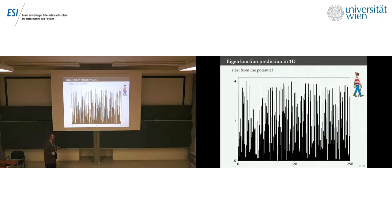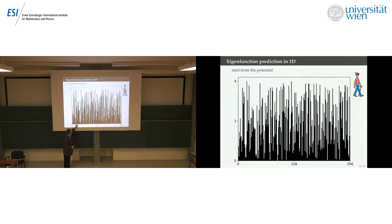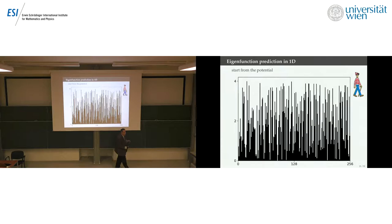I'll start with a game — 'Where is Waldo,' or in German 'Wo ist Walter.' Walter is going to be an eigenfunction walking in the disordered landscape. I took the interval from 0 to 256, divided into 256 unit intervals, assigned a random number between 0 and 4 to each interval. Your job is to tell me where the fundamental eigenfunction of the Schrödinger operator with that potential will localize.